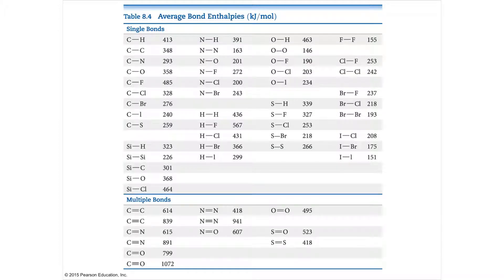Here are the average bond enthalpies for various types of compounds at different phases — some liquids, some gases. This is a good approximation. For methane, breaking all four bonds gives about 415 kilojoules per mole, and the table average is 413. So you may not know your specific case exactly, but you can get in the ballpark using average bond enthalpies.